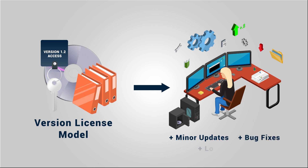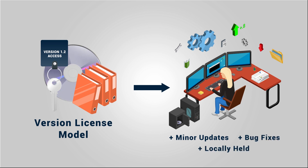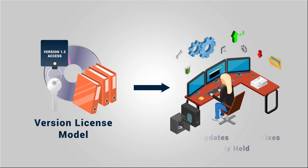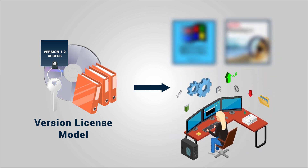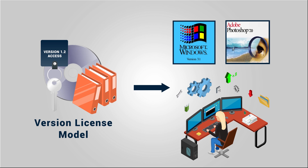This model does a very good job of letting value be retained, as the consumer still receives minor updates and physically holds the software to use at any time in the future. Some examples of version-based licensing models are Microsoft Windows 3.1 and Adobe Photoshop 7.0.